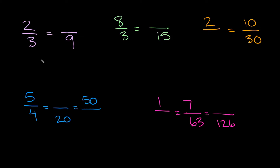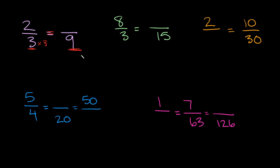Starting at the top left we have two-thirds is equal to something over nine. So how do you find this something? Well all you have to figure out is how to get from one number to the other. So if we're going from three to nine, well in order to get from three to nine you have to multiply by three, because three times three is equal to nine.